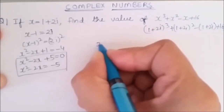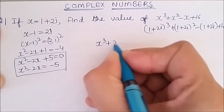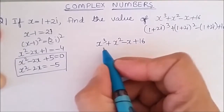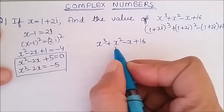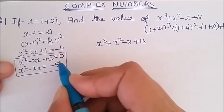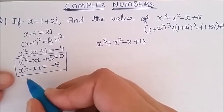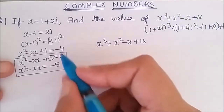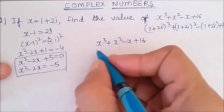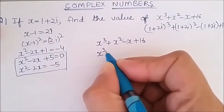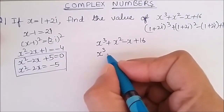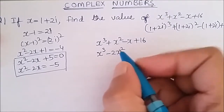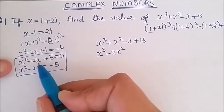We need to find the value of x cube plus x square minus x plus 16. I will try to rewrite this polynomial in a form where I can use x square minus 2x plus 5 equals 0, or x square minus 2x equals minus 5. So x cube remains as x cube, and in place of x square I will write minus 2x square. Why minus 2x square? Because we have x square minus 2x.